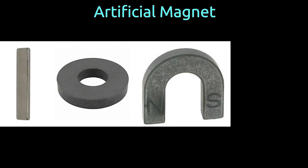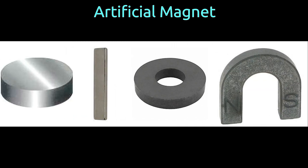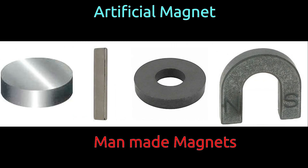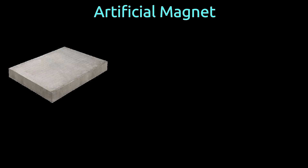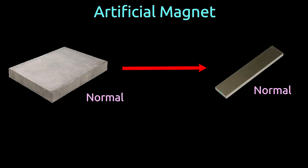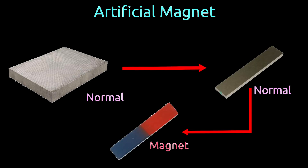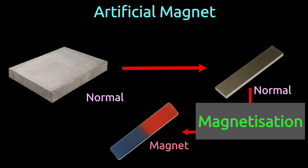On the other hand, artificial magnets come in various shapes. Artificial magnets are also known as man-made magnets. While making an artificial magnet, first normal materials are cut into desired shape and then they are magnetized. The process of converting a normal material to a magnet is known as magnetization.